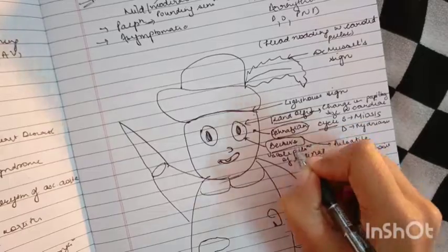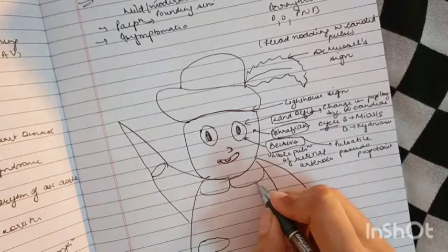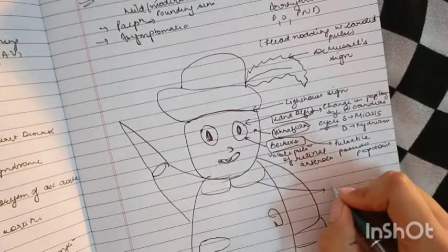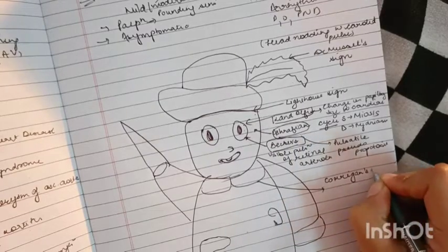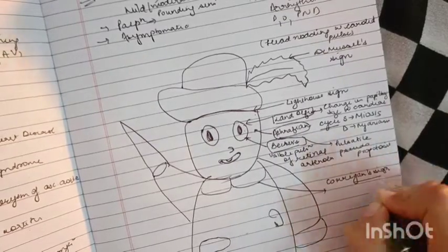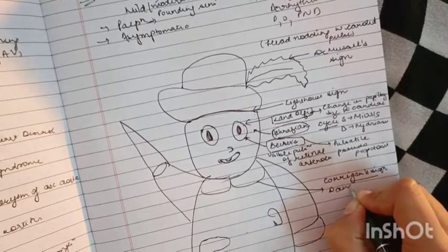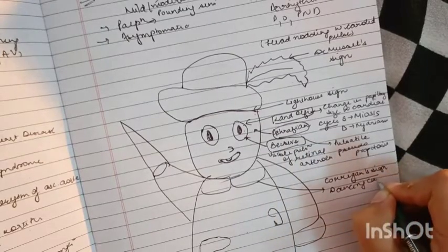Now after Becker's sign, over the collar region. C for collar, C for Corrigan's sign. In this, we see the dancing carotid.